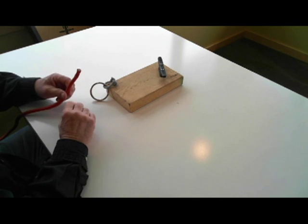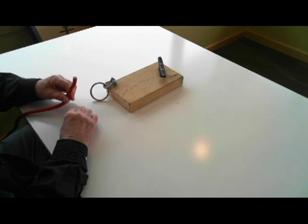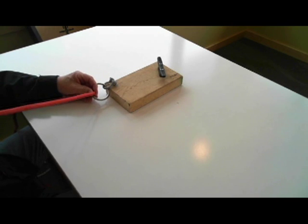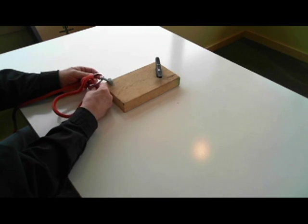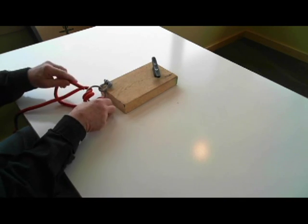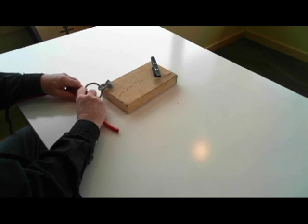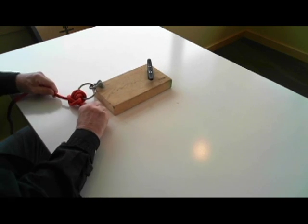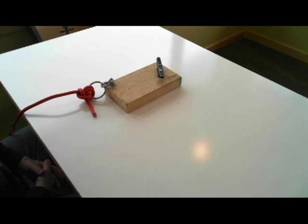I will now tie a fisherman's bend or an anchor bend, either name, and this is a way to tie a line to metal so it will not chafe. So we come up to the back and we go around the ring three times. We go under the line and then through the centers, tighten her up, and then one more half hitch. This is so the line does not chafe on the metal. A fisherman's bend or an anchor bend.